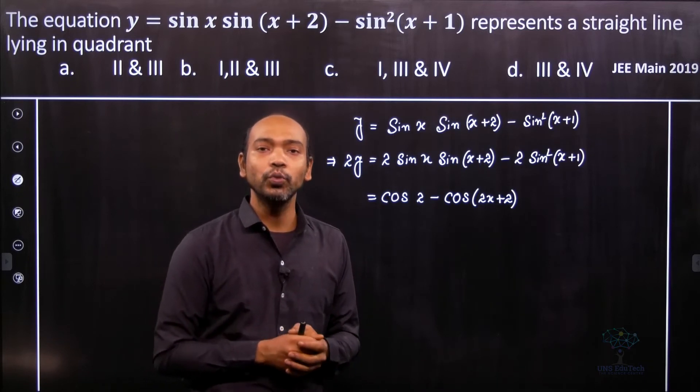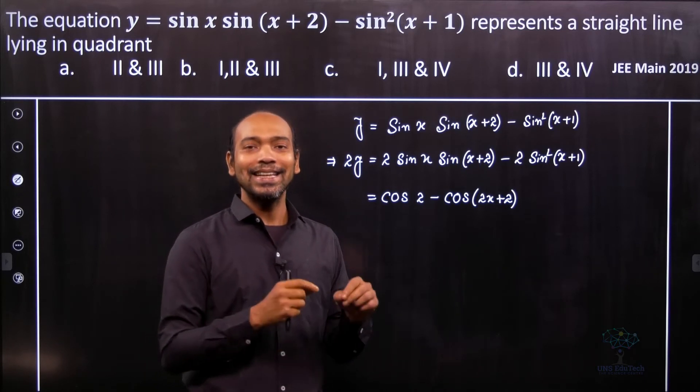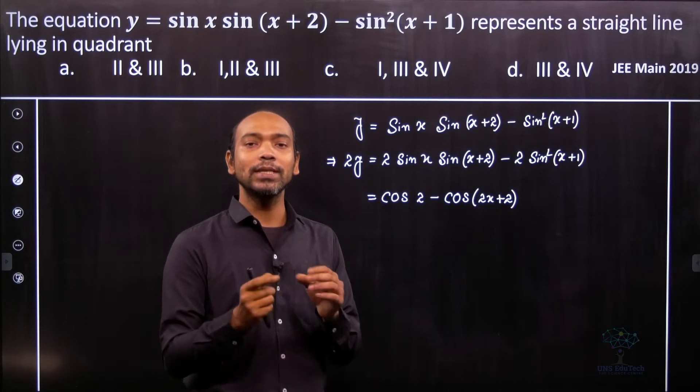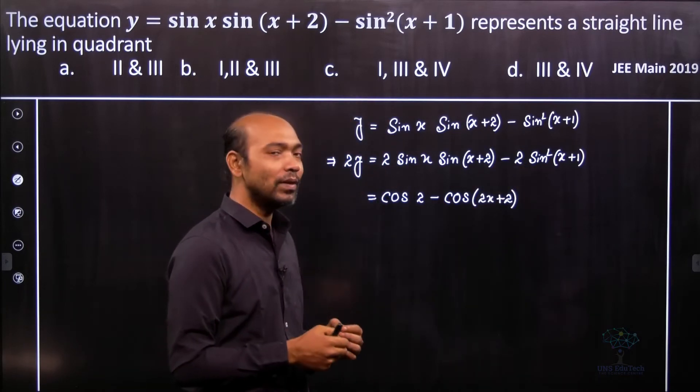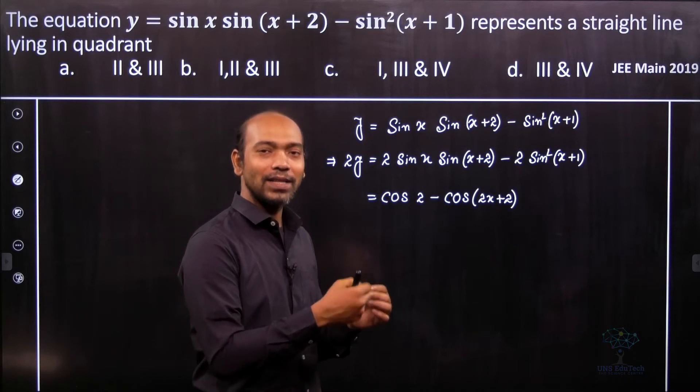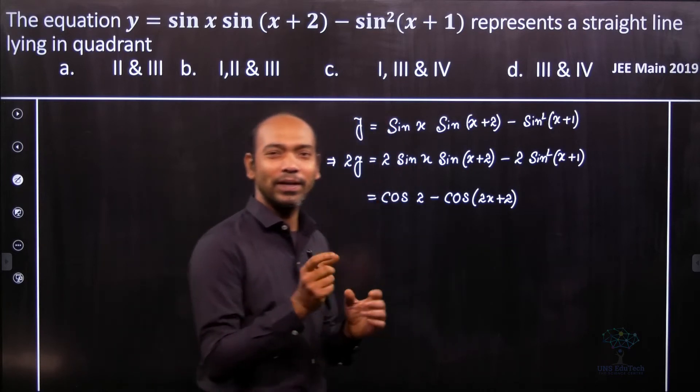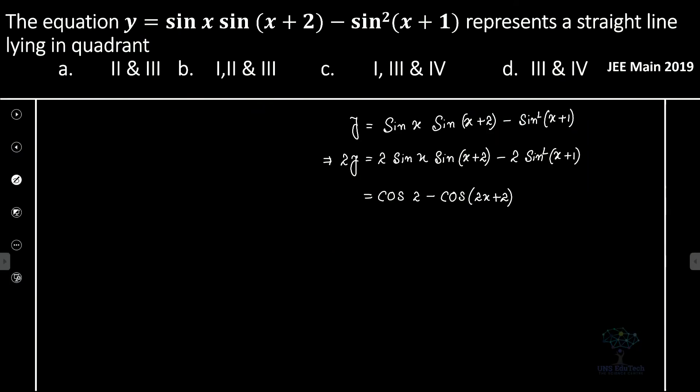Now for the sine squared term, we know the formula cos 2θ = 1 - 2 sin²θ. So let's write down this formula because it's very important.